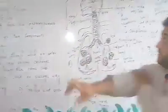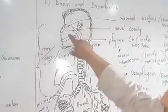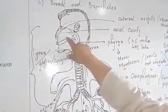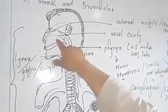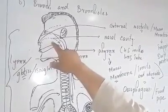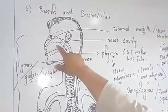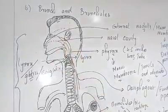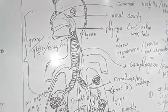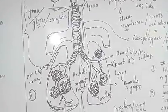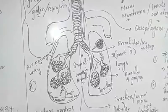Also, the nasal cavity contains hair-like structures which filter dust particles and bacteria. Additionally, the nasal cavity consists of a mucous membrane. This mucous membrane secretes a fluid or mucilaginous substance known as mucus. This mucus helps trap dust particles and bacteria. From here, the air enters into the next part, which is known as the pharynx.